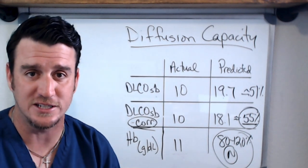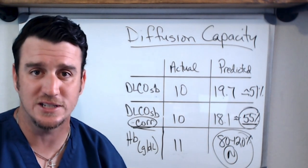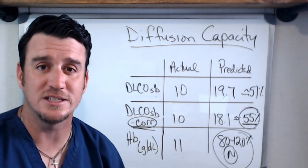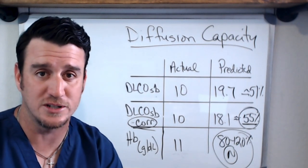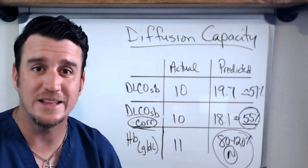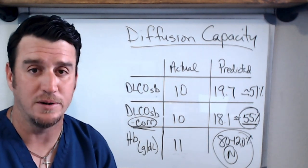We know normal's 80 to 120, this is obviously decreased. Does this tell us if we have an obstructive disease process? No. Does it tell us we have a restrictive disease process? No. Does it tell us we have a pulmonary circulation process or disorder? No. It tells us none of that. It tells us that we have a problem...